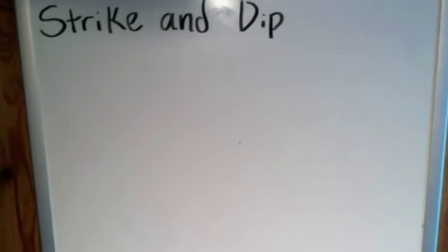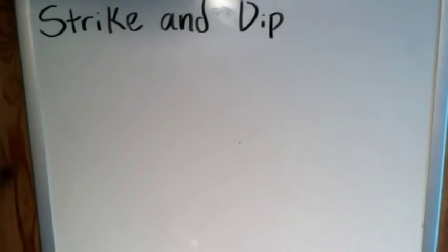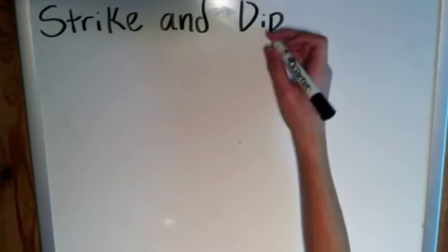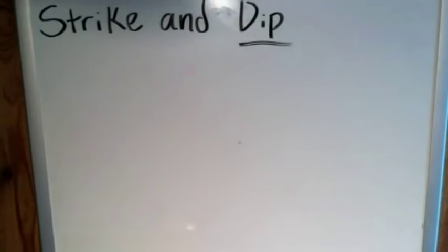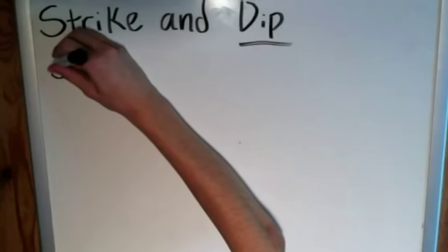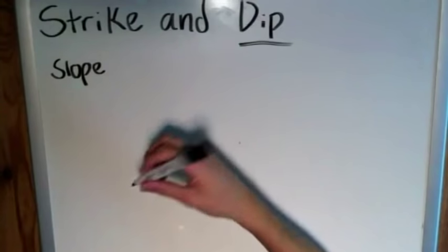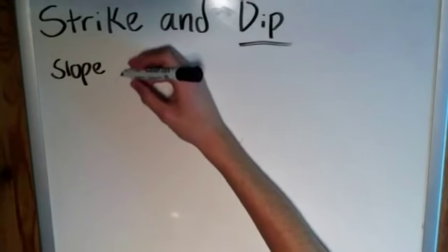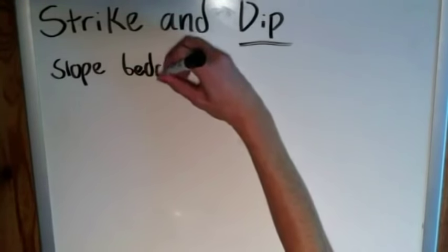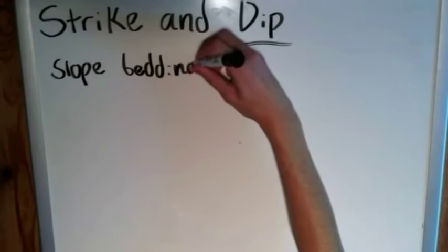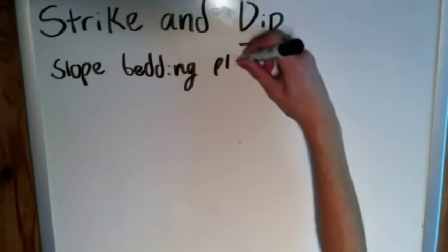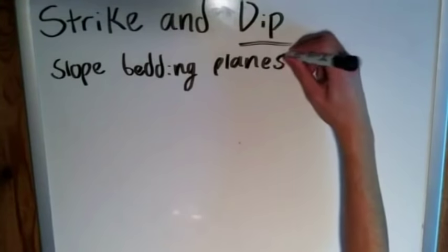Welcome back. In this video we'll be discussing strike and dip — specifically defining them and then looking at some examples to see exactly what they look like on different diagrams. We'll start with dip. Dip is essentially the slope of a surface, and in geology we use it for bedding planes and strata, or sometimes contact boundaries such as faults.